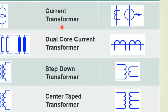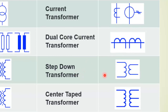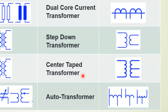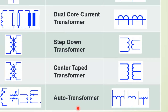Then come the instrumentation transformer types. The current transformer, for which you can see two symbols. The dual core current transformer has two different secondaries. Then the step down transformer, the center tap transformer, and finally the auto transformer.